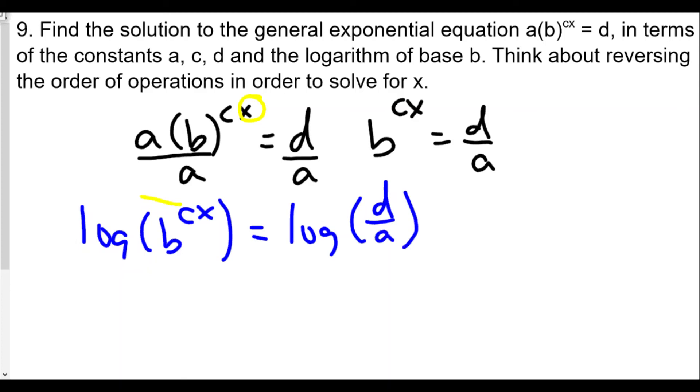Anytime we have the variable as an exponent, we take the log of both sides. So we have log of b raised to cx equals the log of d over a. The power rule, very powerful rule here, brings our exponent down. So now we have cx times the log of b equals the log of d over a.